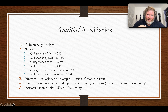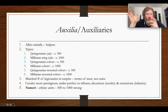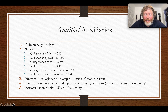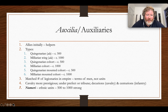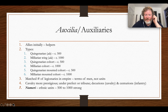Taking the alae cavalry, infantry cohortes, and mounted cohorts in turn — they are each divided into two numerical sizes. There's the quingenarian, which numbers about 500 or so, and then there's the miliary, which numbers about 1,000 or so soldiers in each unit.